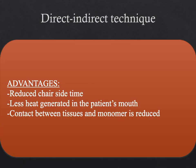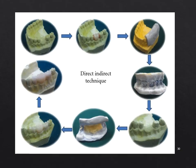In the direct-indirect technique, advantages include reduced chair-side time, less heat generated in the patient's mouth, and reduced contact between the tissues and the monomer. This slide shows the direct-indirect technique wherein the provisionals are fabricated by the indirect technique, and when tooth preparation is completed, the provisionals are relined with self-curing resin. Disadvantages include that occlusal adjustments will still be needed, and the external surface form should be finished and polished before cementing in the patient's mouth.